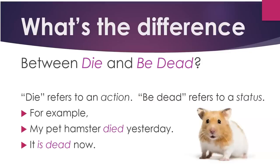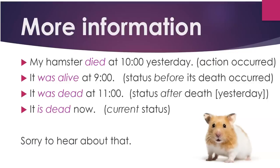What's the difference between die and be dead? Die refers to an action. Be dead refers to a status. For example, my pet hamster died yesterday — it is dead now. My hamster died at 10 o'clock yesterday; that's when the action occurred. It was alive at 9 o'clock — that's talking about the status before its death occurred. It was dead at 11 o'clock — that's the status or condition after death.